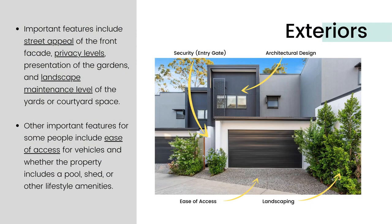Potential buyers and renters generally look for the street appeal of the front façade, privacy levels, presentation of the gardens, and landscape maintenance level of the yards or courtyard space. Other important features include ease of access for vehicles and whether the property includes a pool, shed, or other lifestyle amenities. You should aim to capture the front exterior photo at the best possible angle, as you will most likely use this as the hero shot in your online listing — the first photograph a potential buyer or renter sees.